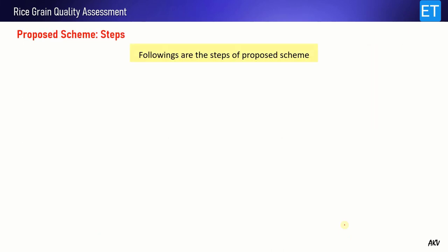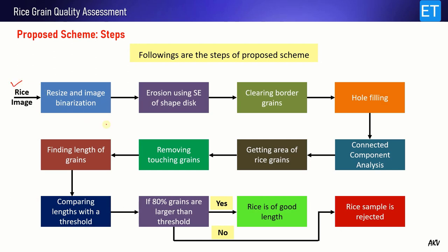Although we have more powerful algorithms available to deal with such problems, here assuming the light is sufficient we are using only an adaptive binarization scheme. Now let's look at the complete scheme. The rice image is taken and the first step is to resize it and binarize it. After that we go for erosion using a structural element of type disc with radius 2, then we clear all the border elements — the rice grains lying on the border — and then we go for morphological hole filling. Then we do connected component analysis, find the area of each rice grain, and using those areas with an area criterion we remove the touching grains, because touching grains create a larger area and with a particular threshold comparison we can remove those larger areas.